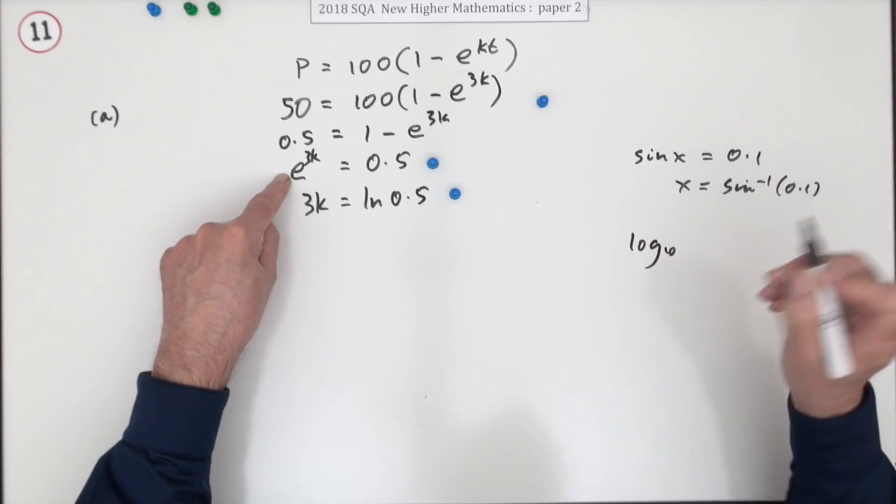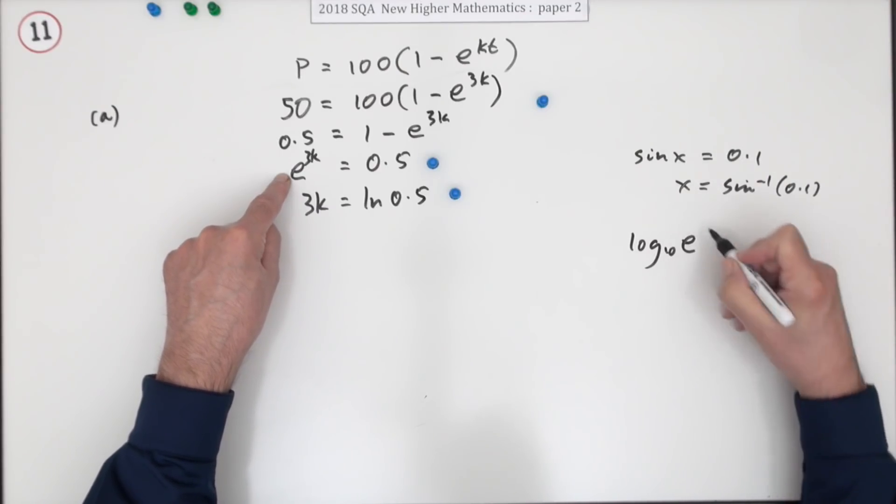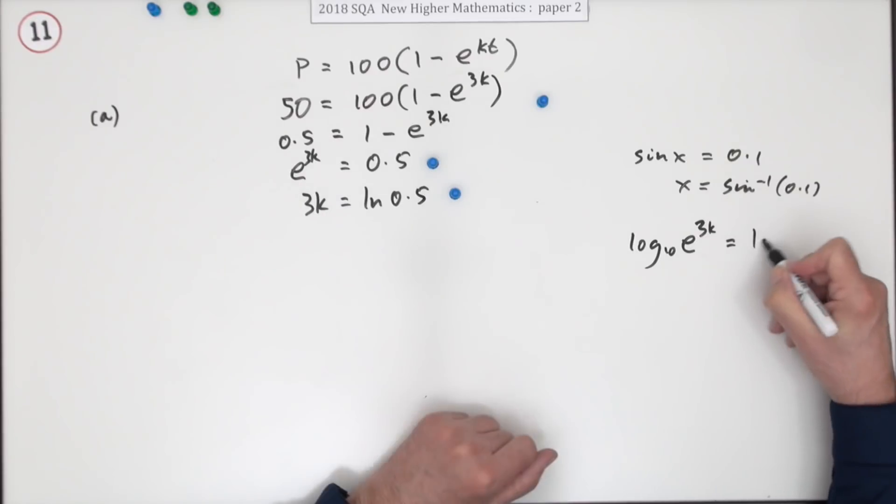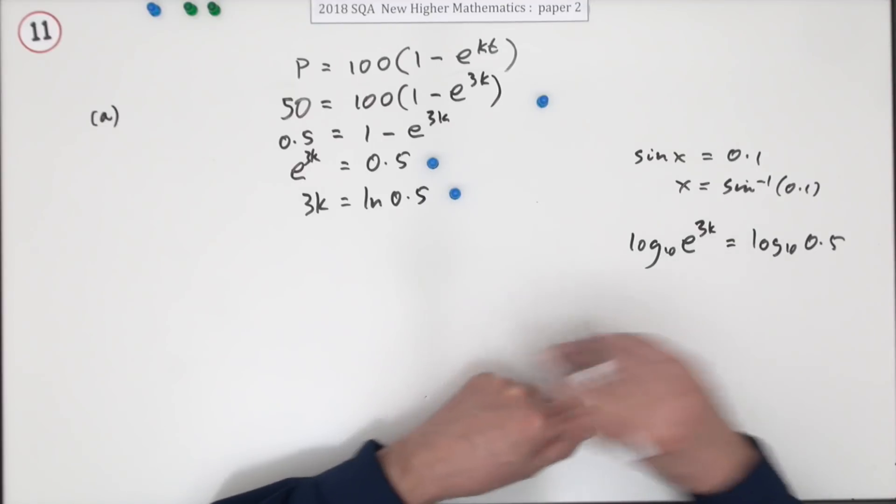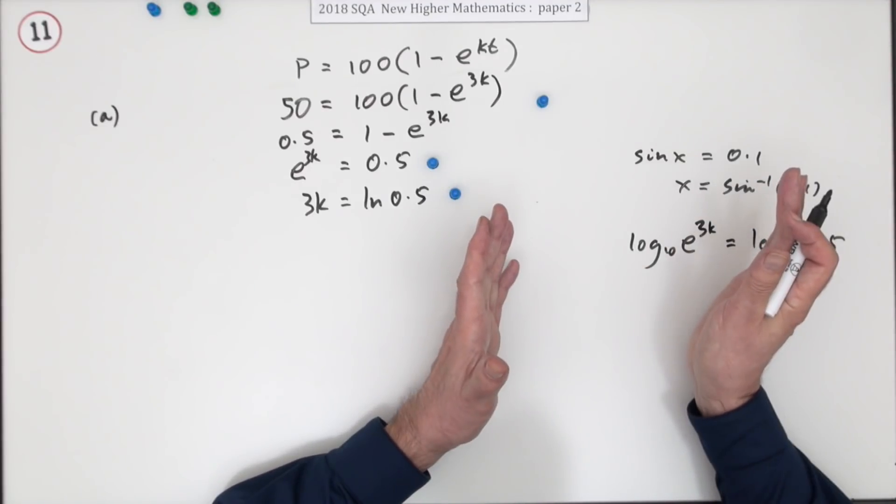You can even do log base 10 for instance here, you could say, oh if it took your fancy, but it shouldn't. Log base 10 of e to the 3k is log base 10 of 0.5. Obviously you wouldn't choose log 10, but I'm just saying that would make no difference.